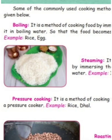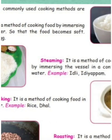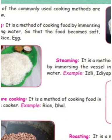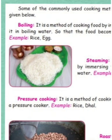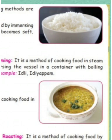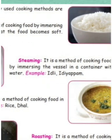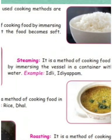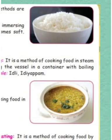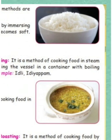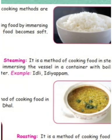Third one: Pressure cooking — it's a method of cooking food in a pressure cooker. Example: rice, dal. Fourth: Roasting — it's a method of cooking food by heating on a tawa or frying pan without oil. Example: groundnut and cashew nut.